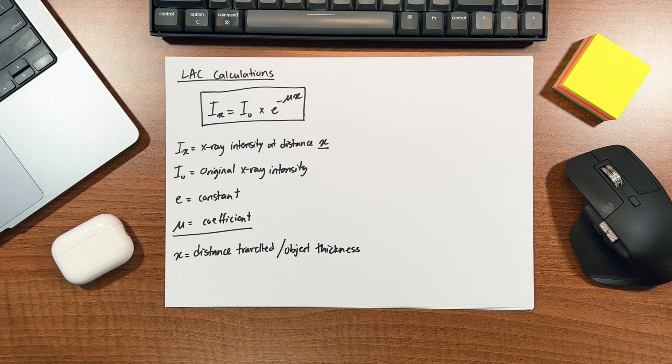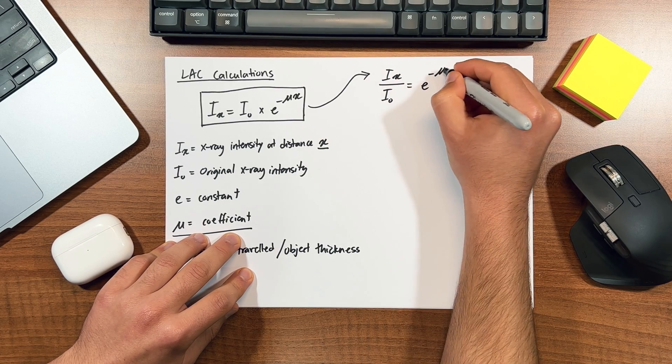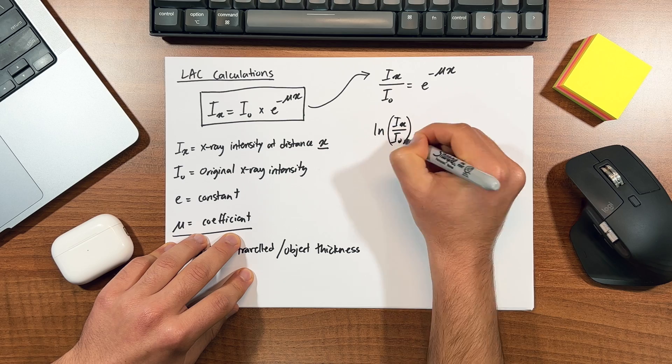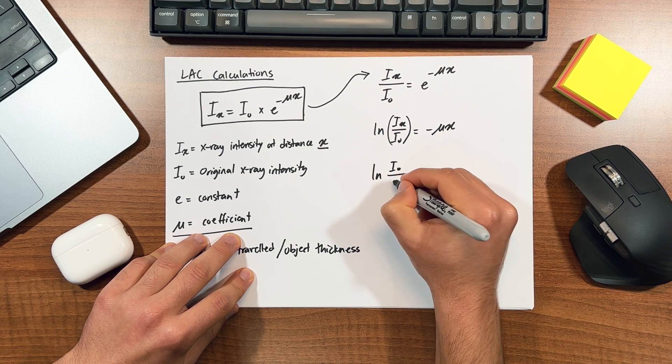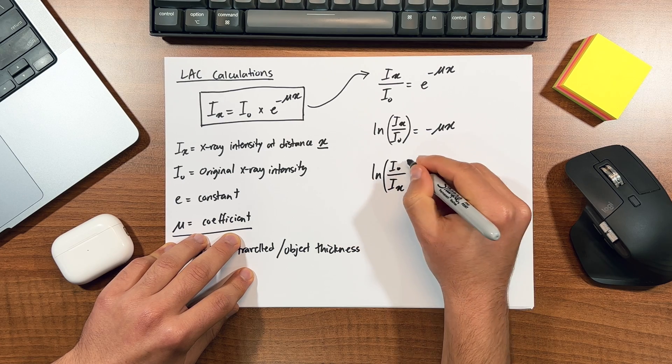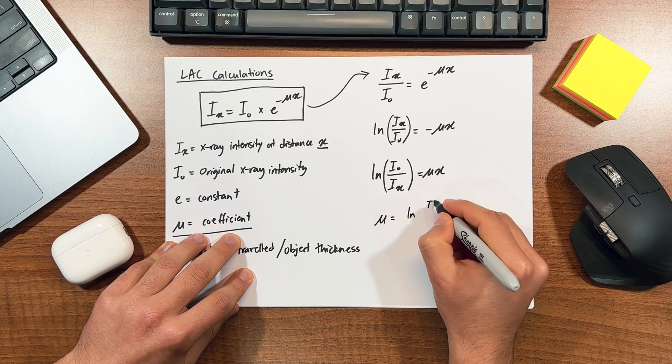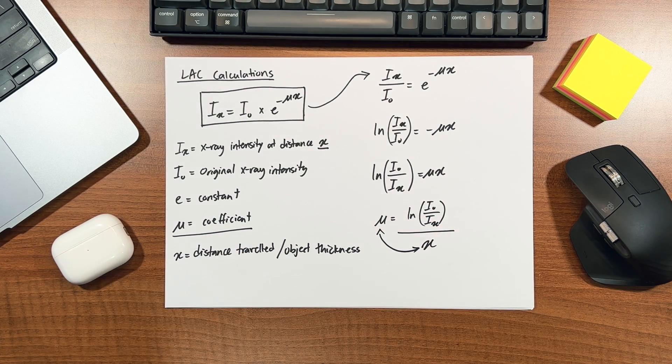So we can actually rearrange this formula using simple algebra and log rules, which hopefully you'll recall from high school maths. Let's say that we want to isolate mu by itself so we calculate the coefficient for a piece of tissue or material. First let's divide both sides by I0, then take the natural log of both sides. And note that when you do that for e, it brings down the exponent as a coefficient. Now I'll multiply both sides by minus 1, which gets me mu x on the right hand side and a flipped log on the left because log rules. And then simply divide both sides by x to get mu isolated, or alternatively I could have divided by mu and got an x by itself. Are you with me?